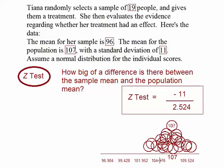Three standard errors would get us down to 99.428. And if we keep going down to get to 96.904, that would be 1, 2, 3, 4 standard errors. So that's very unlikely to occur because of a sampling error.